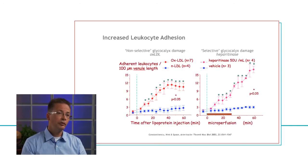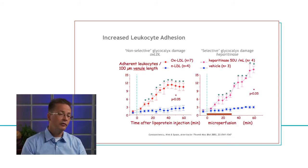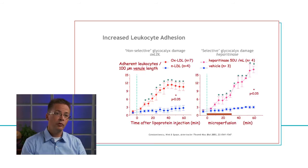I can show you two examples of what happens when glycocalyx is damaged. On the left, glycocalyx is damaged by exposure to oxidized LDL cholesterol, which is very toxic and plays a part in the development of atherosclerotic disease. The blue curve shows the normal low level of leukocyte adhesion to the vessel wall. The red dots demonstrate that when oxidized LDL cholesterol breaks down glycocalyx, already within half an hour there is a huge increase in inflammatory cells sticking to the vessel wall. On the right, specific enzymes like hyaluronidase and heparitinase break down specific components of the glycocalyx, and similarly there is a major increase in adhering leukocytes and sticking inflammatory cells to the vascular wall.